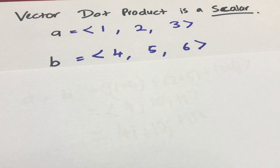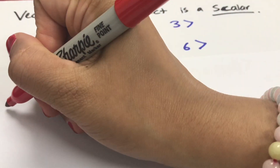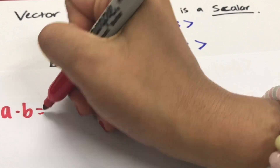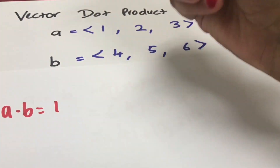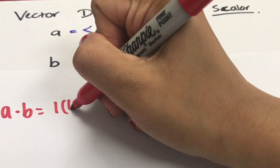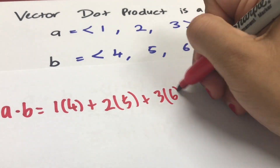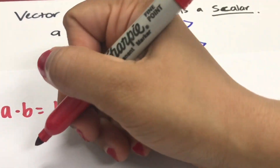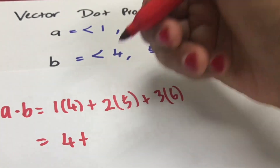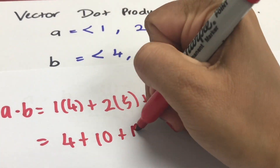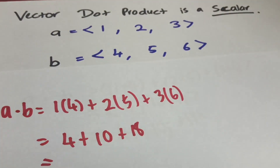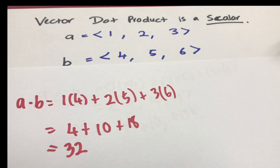Let's find the dot product of vector a and b. We have a dot b as m multiplied by 4 plus 2, which gives us 4 plus — and we have here the dot product of vector a and b as 32, which is a number or a scalar.